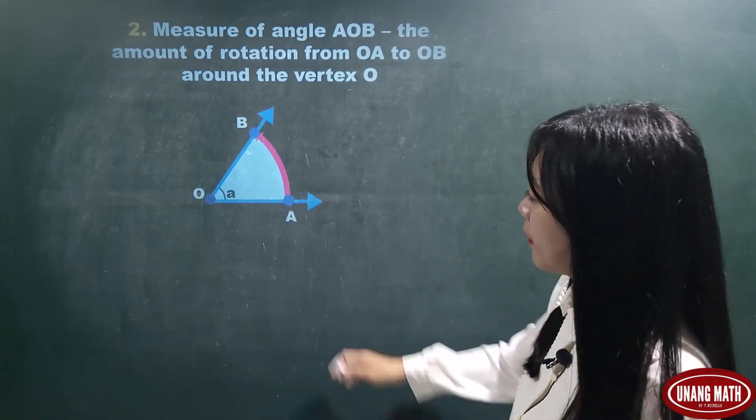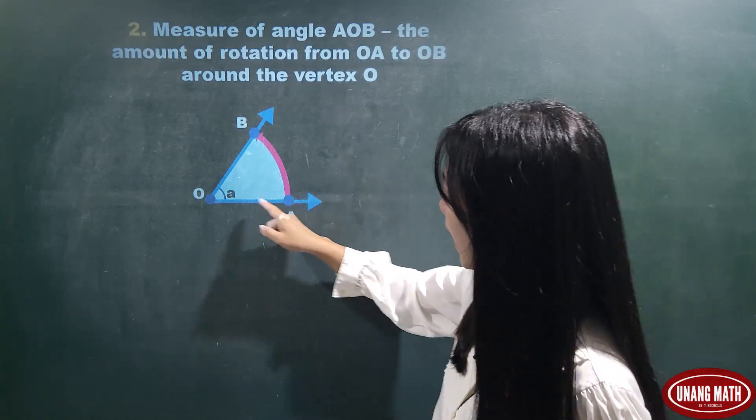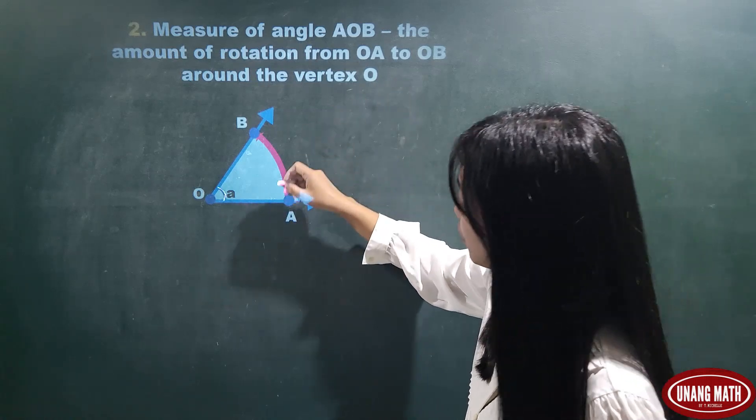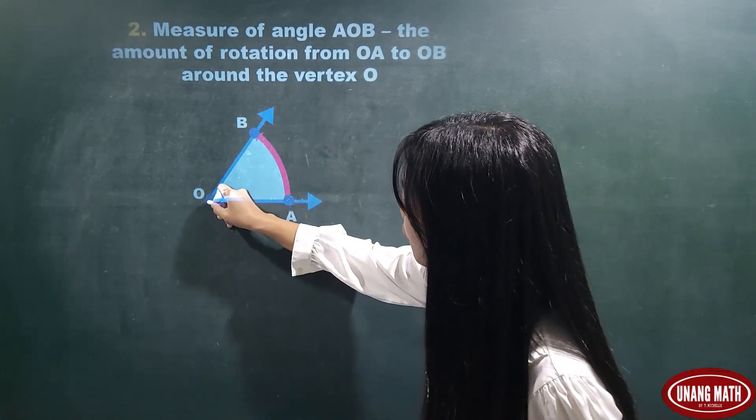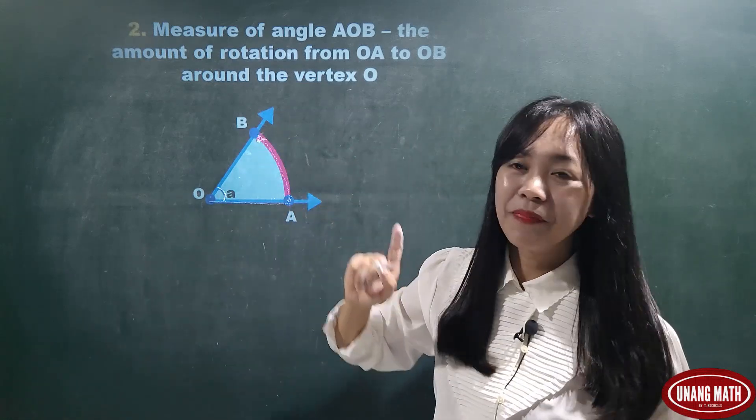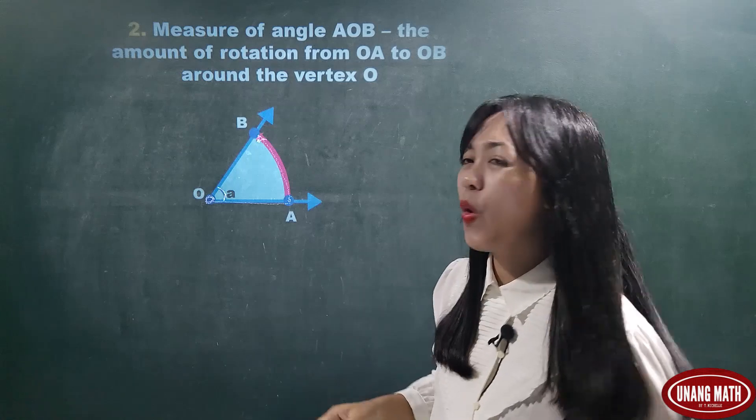So, in our example, the measure of angle AOB or angle BOA, this is the amount of rotation from ray OA to OB around the vertex O.